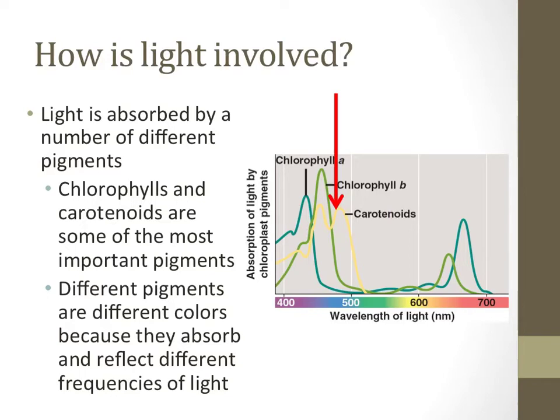Carotenoids, shown with a yellow line, absorb lots of purple, blue, and green light. The red arrow points at this region of the electromagnetic spectrum. Since carotenoids don't absorb much yellow or orange light, they reflect it. This is why some plants, such as carrots for example, appear orange or yellow in color. They have lots of carotenoids and fewer chlorophylls that would give them their distinct appearance.